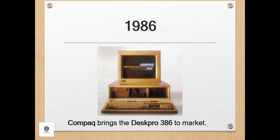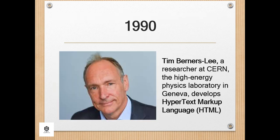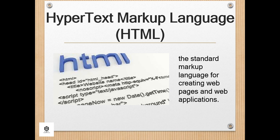In 1986, Compaq brought the Deskpro 386 to market; its 32-bit architecture provided a speed comparable to mainframes. During 1990, Tim Berners-Lee, a researcher at CERN — the high-energy physics laboratory in Geneva — developed Hypertext Markup Language, or HTML, giving rise to the World Wide Web. HTML is the standard markup language for creating web pages and web applications. The first normal specification for HTML was published in November 1995 as IETF RFC 1866, which is HTML 2.0.